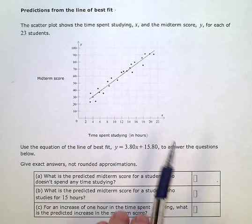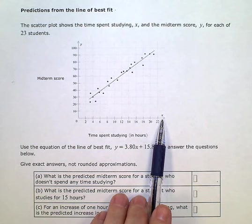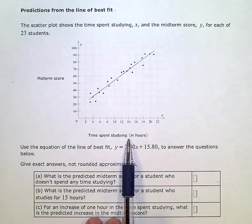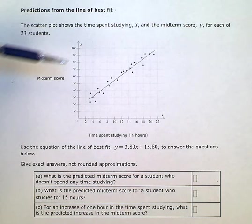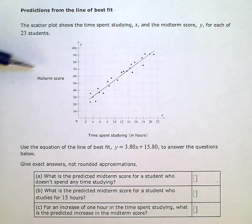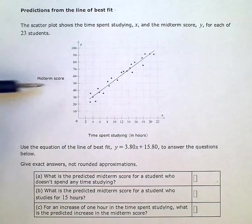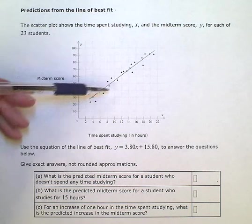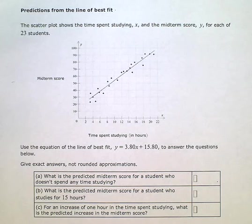So we can see our x here along the horizontal axis is the time spent studying in hours and our y axis here is the midterm score. And there's 23 data points on our scatter plot for the 23 students. Use the equation of the line of best fit.